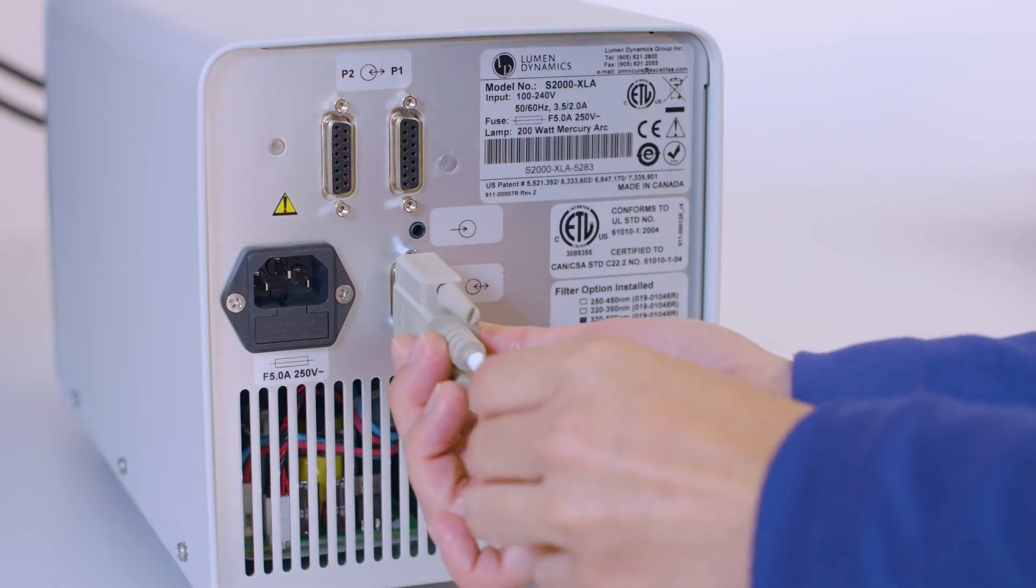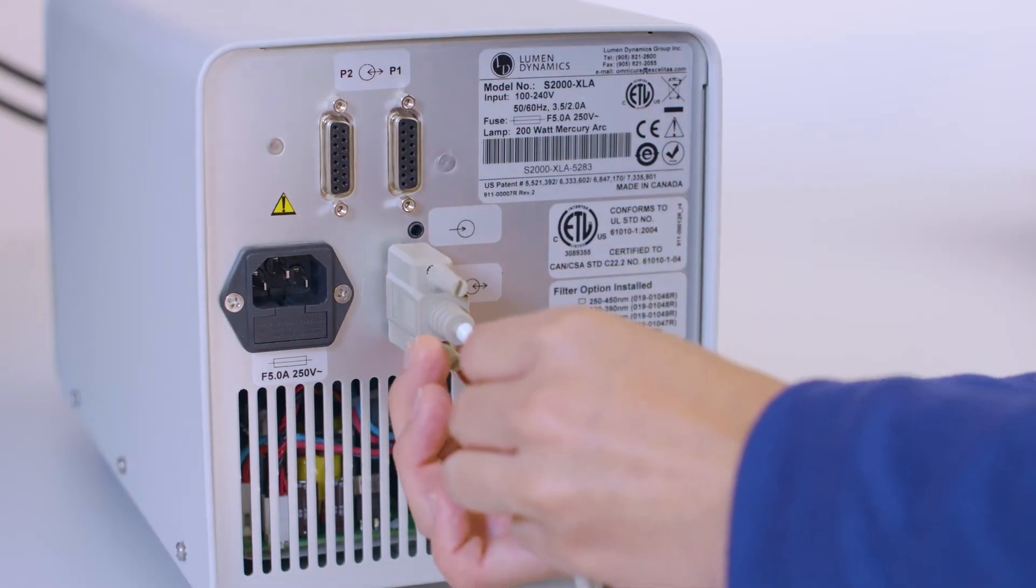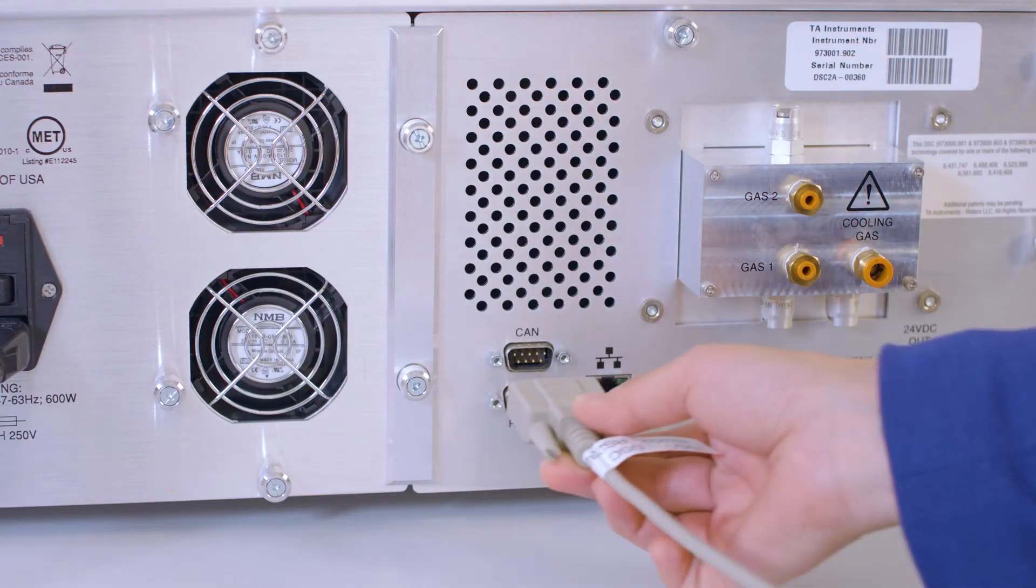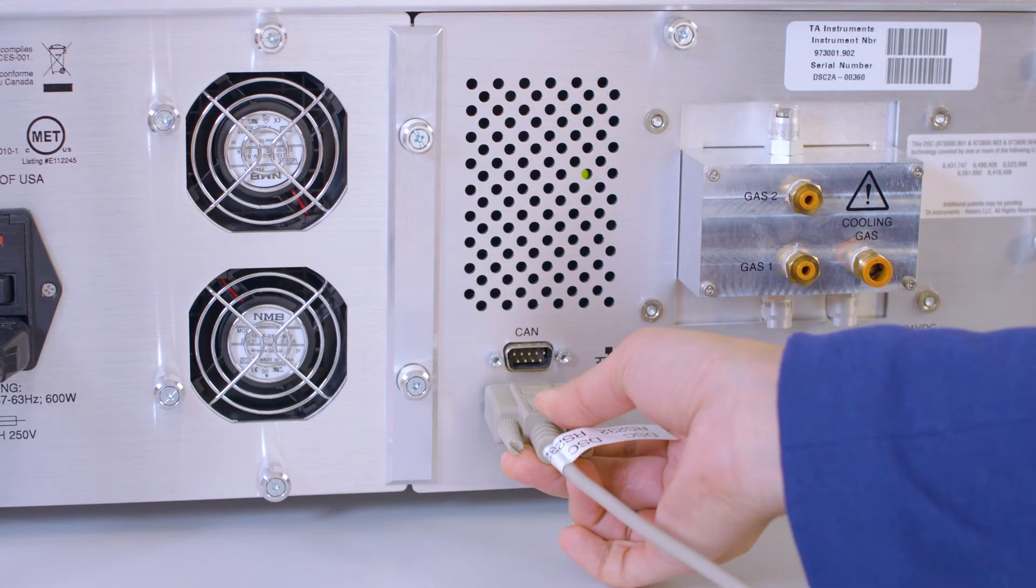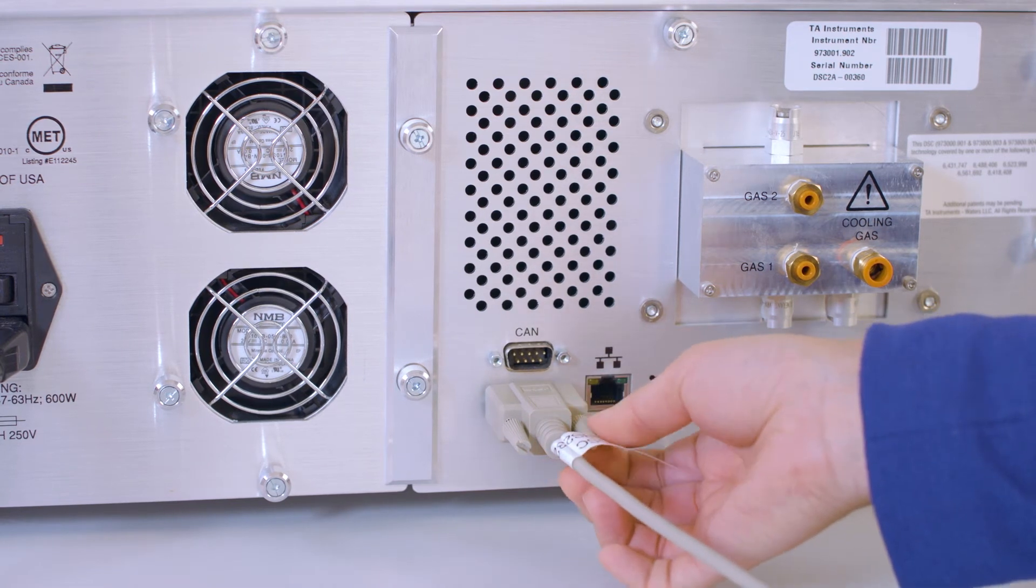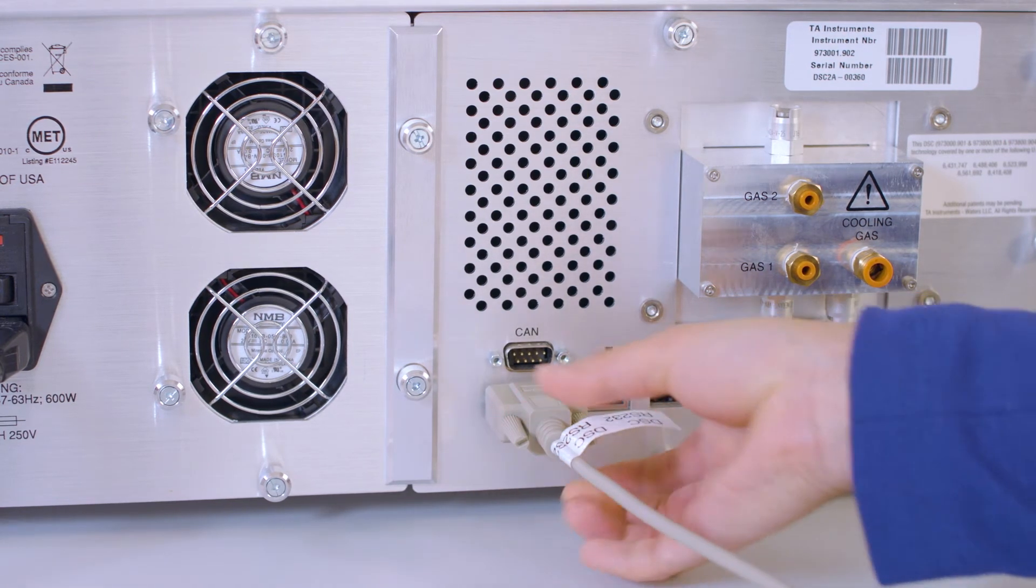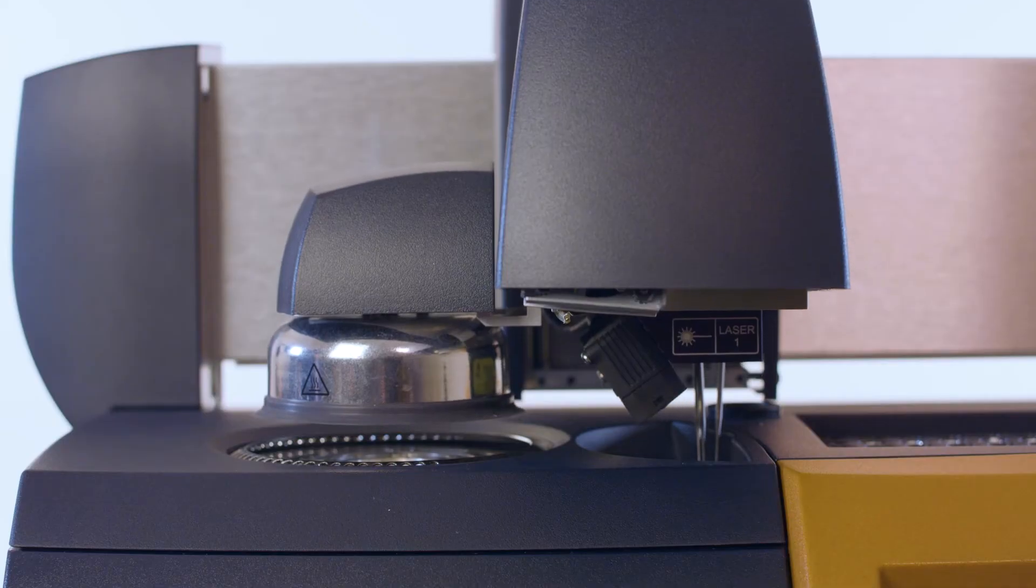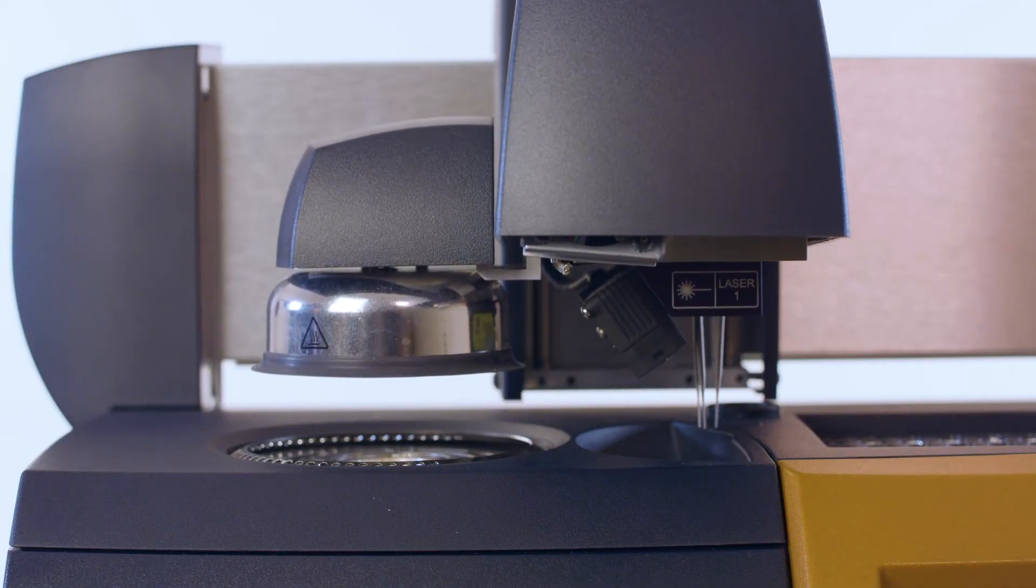Plug the RS-232 cable into the P3 port on the back of the PCA unit. Connect the other end to the RS-232 port on the back of the instrument. This allows the PCA light source shutter to be opened and closed using the PCA shutter and PCA exposure segment in the instrument control software.